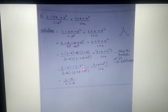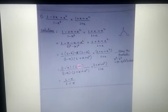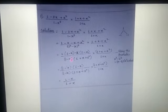Now (1 + x + x²) cancels with (1 + x + x²), and (1 - x) cancels with (1 - x). In the numerator, (1 - x) is left, and in the denominator, (1 + x) remains. So the answer to sum 8 is (1 - x) / (1 + x).